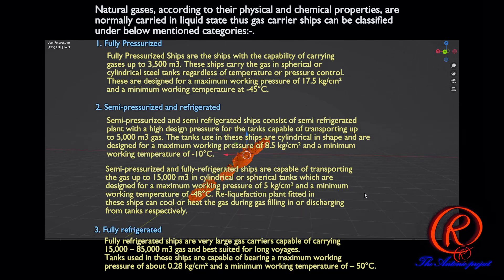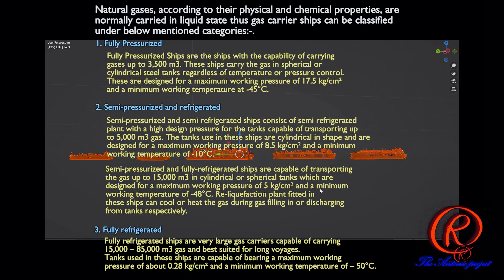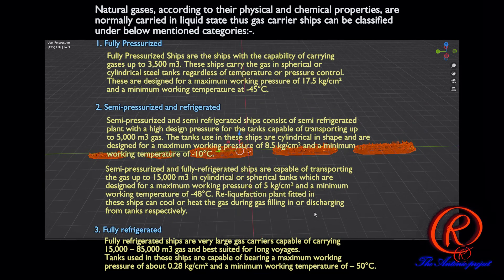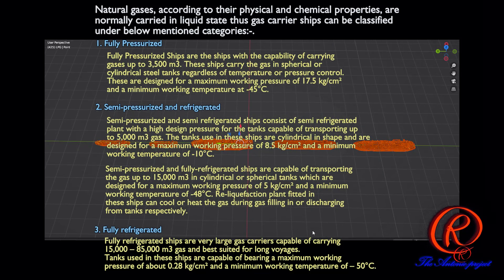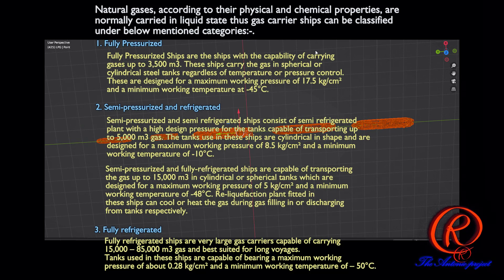1. Fully Pressurized ships are ships with the capability of carrying gases up to 3,500 cubic meters. These ships carry the gas in spherical or cylindrical steel tanks regardless of temperature or pressure control. They are designed for a maximum working pressure of 17.5 kg per square centimeter and a minimum working temperature of minus 45 degrees Celsius.